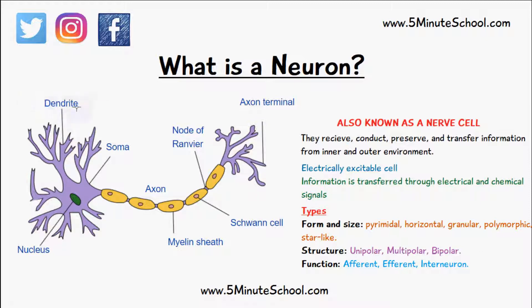These are known as dendrites, which are like tree-like branches, and these are responsible for transferring the electrical impulse to other neurons via a synapse, which we're going to talk about shortly.